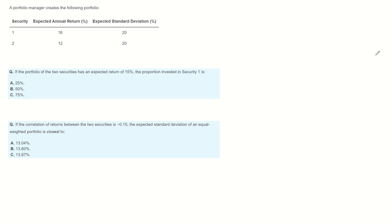A portfolio manager creates the following portfolio using Security 1 and 2. The first question: if the portfolio of two securities has an expected return of 15%, what is the proportion invested in Security 1?